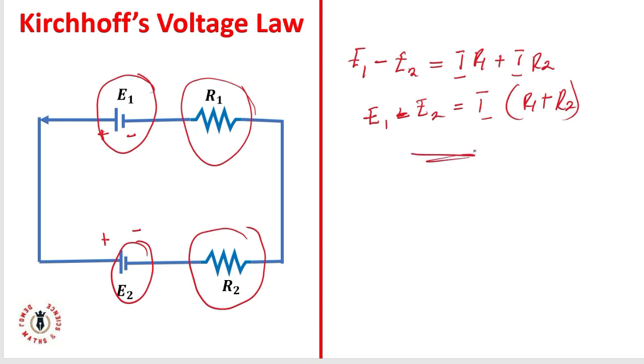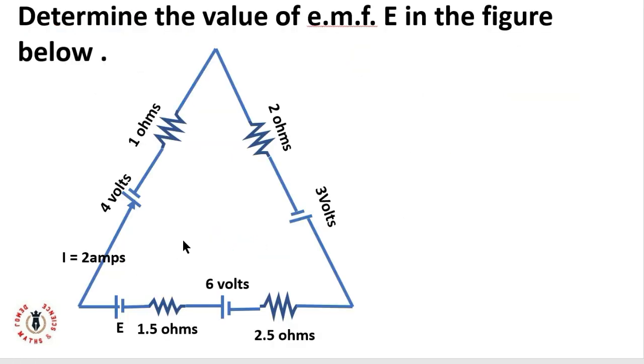Let's take an example to help us understand this better. My example says determine the value of the EMF E in this figure. If you look at this figure, it's a closed loop. Do not mind how we've drawn it, whether it's a rectangle, triangle, or even a circle. The most important thing is we must establish the direction of the voltage in this closed loop. This is positive and this is negative. Here also is positive, my E here, and this is negative. Here is positive and here is negative.